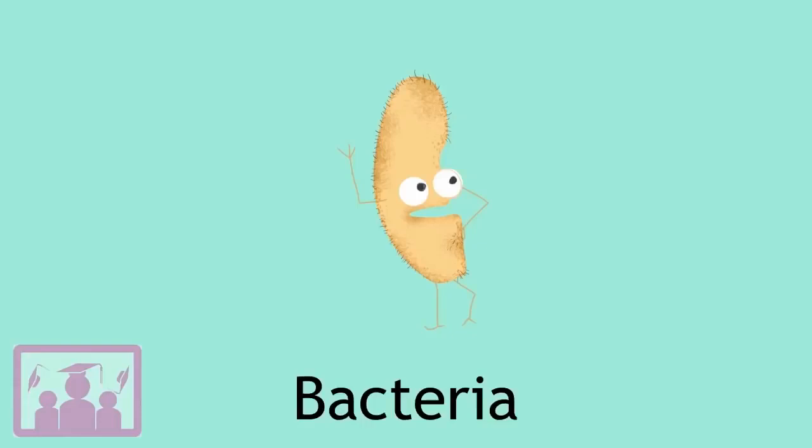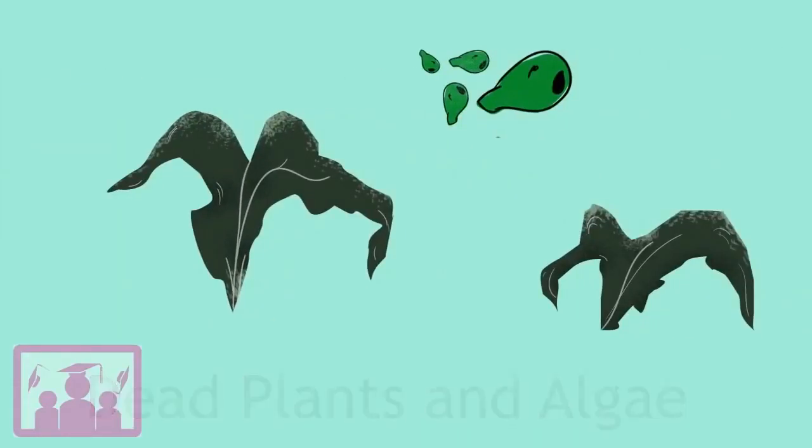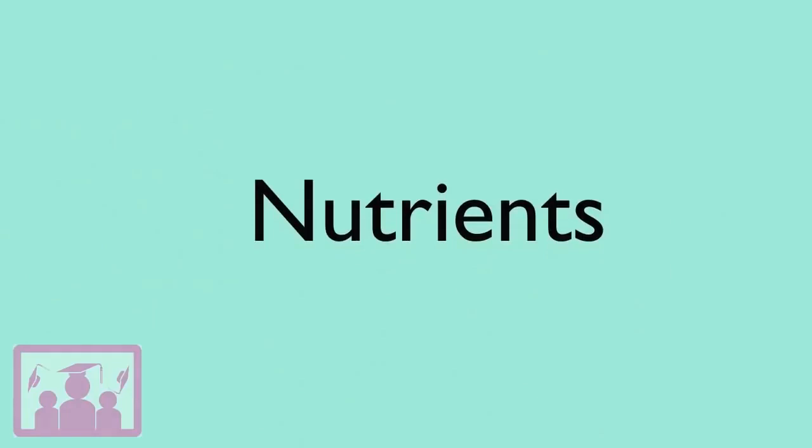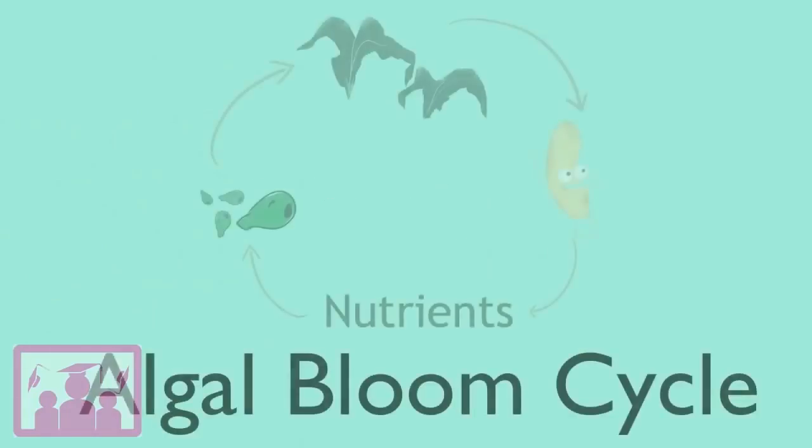Next, bacteria start to break down the dead plants and algae, and that releases more nutrients back into the water, continuing the algal bloom cycle.